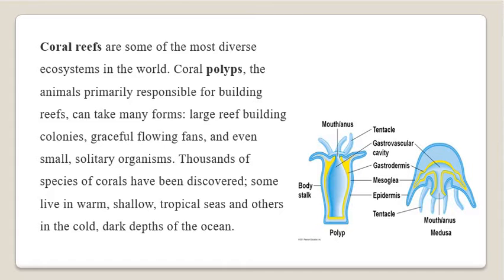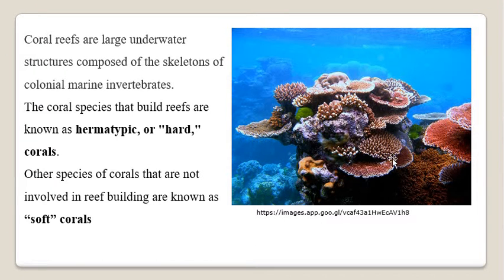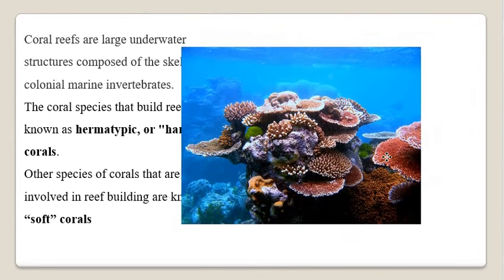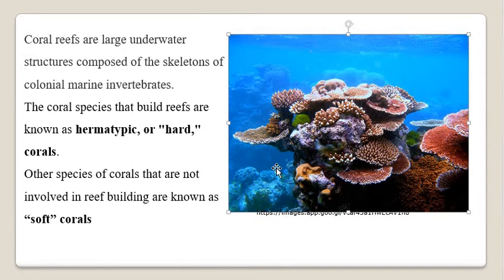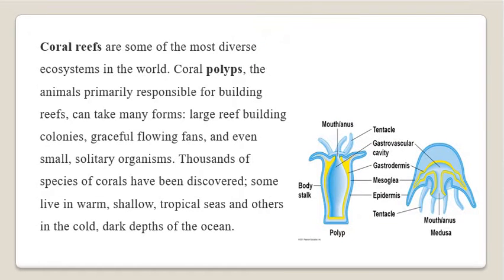How do corals form? See this beautiful structure - this is nothing but the coral. All these different types of polyps are present on pre-existing ones. These are all nothing but the corals. These are coral reefs and these are live corals, or you can say polyps - colonies of the polyps.